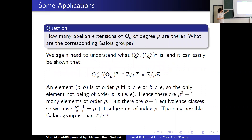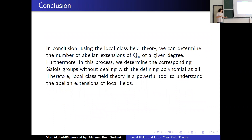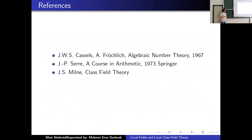As a last example, you can look at the degree p extensions of Q_p. The group is again the same decomposition, and you need to find degree p — that is, order p — subgroups. There are p+1 many such subgroups, so there are p+1 extensions of Q_p of degree p, and the only possible Galois group is Z/p. In conclusion, using local class field theory, we can determine the number of abelian extensions and also their Galois groups. Local class field theory is a powerful tool for understanding the abelian extensions of local fields. Thank you for listening.